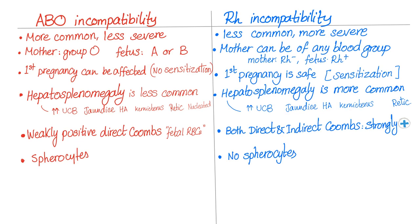For the Coombs test: in ABO incompatibility, we have a weakly positive direct Coombs test for the fetal red blood cells. In RH incompatibility, it is more severe, so both direct and indirect Coombs tests are strongly positive. In ABO incompatibility, we have spherocytes on the blood smear, whereas in RH incompatibility there are no spherocytes, because the entire red blood cell is phagocytosed by macrophages.